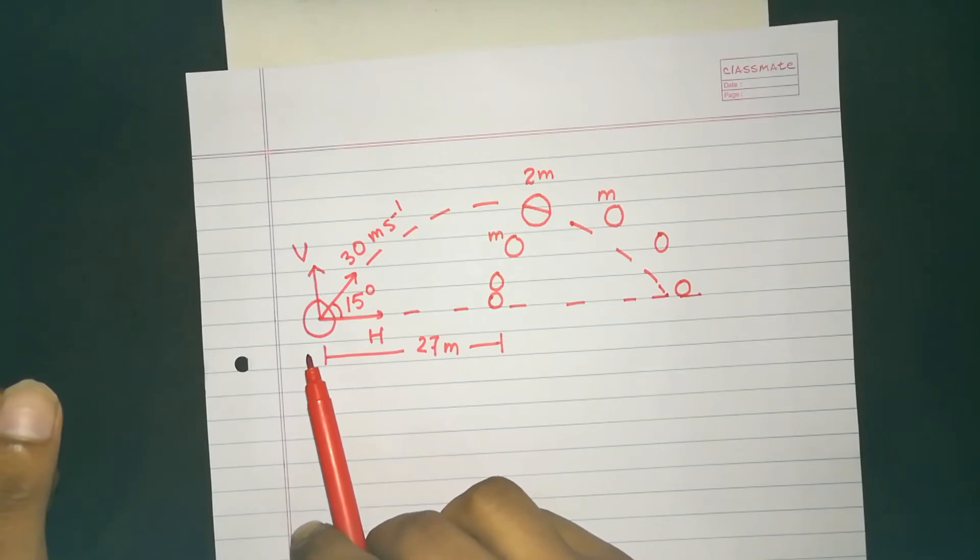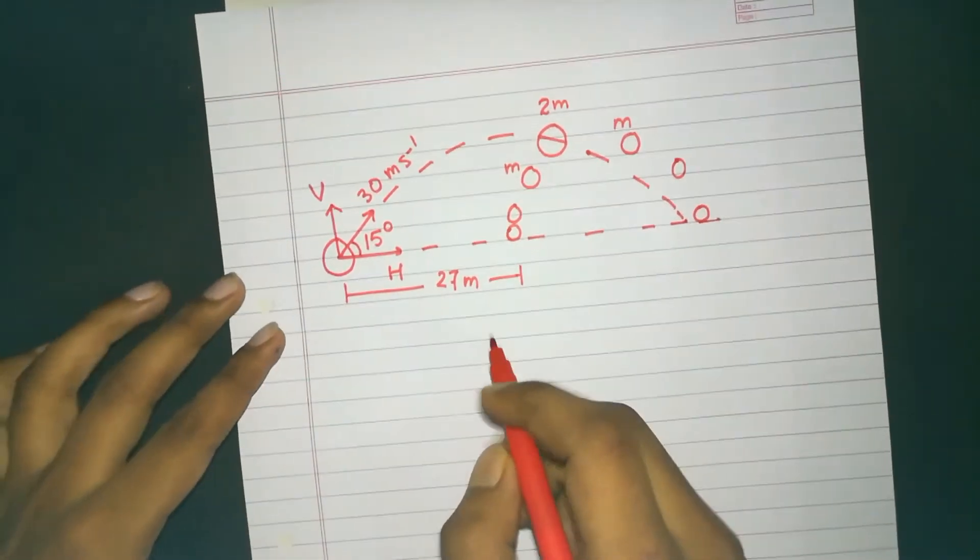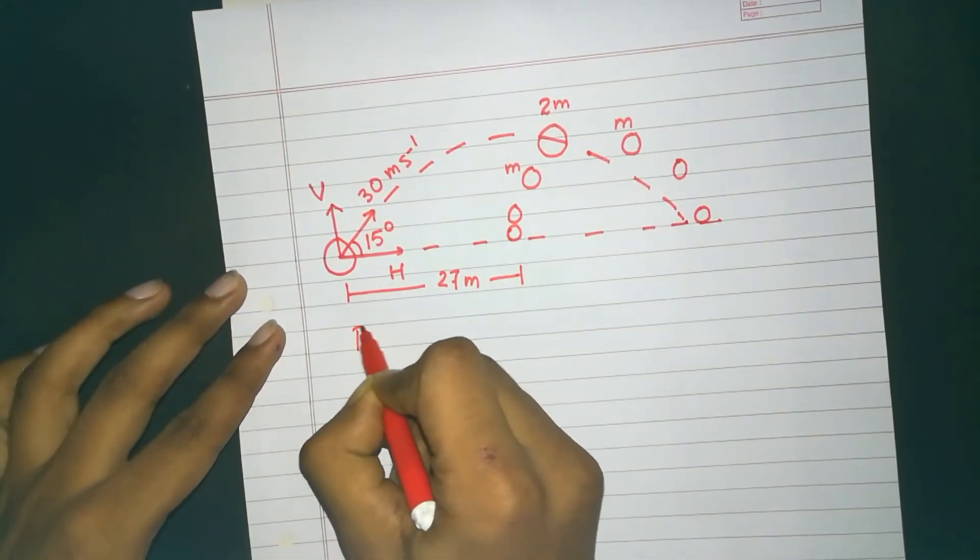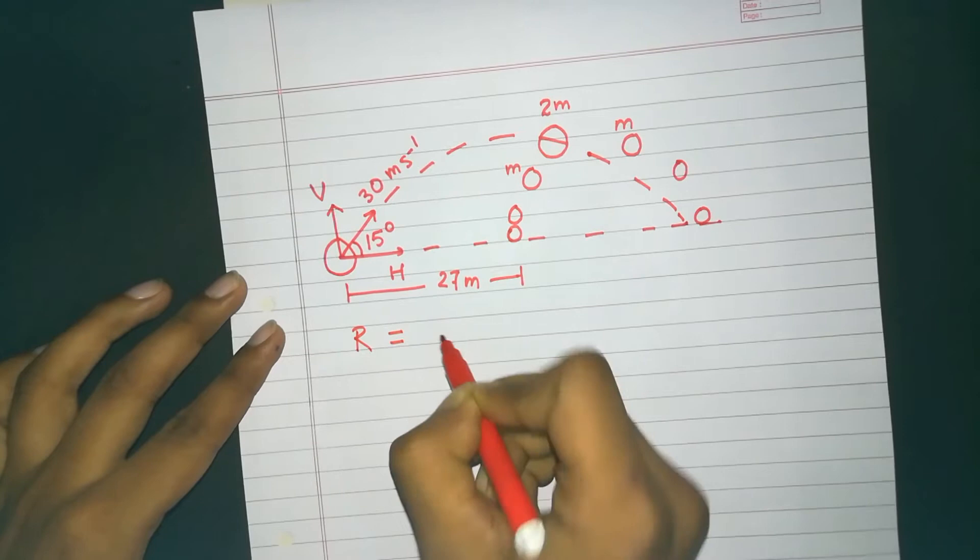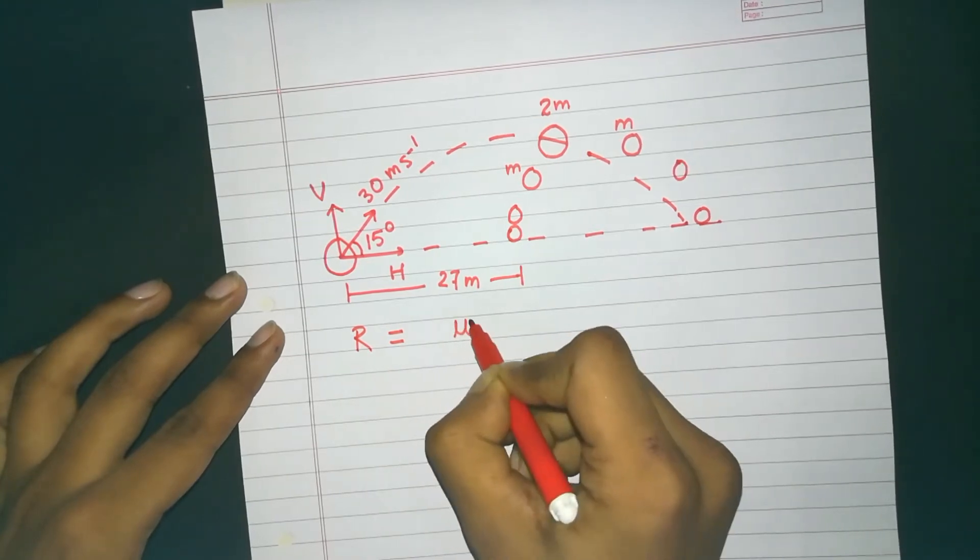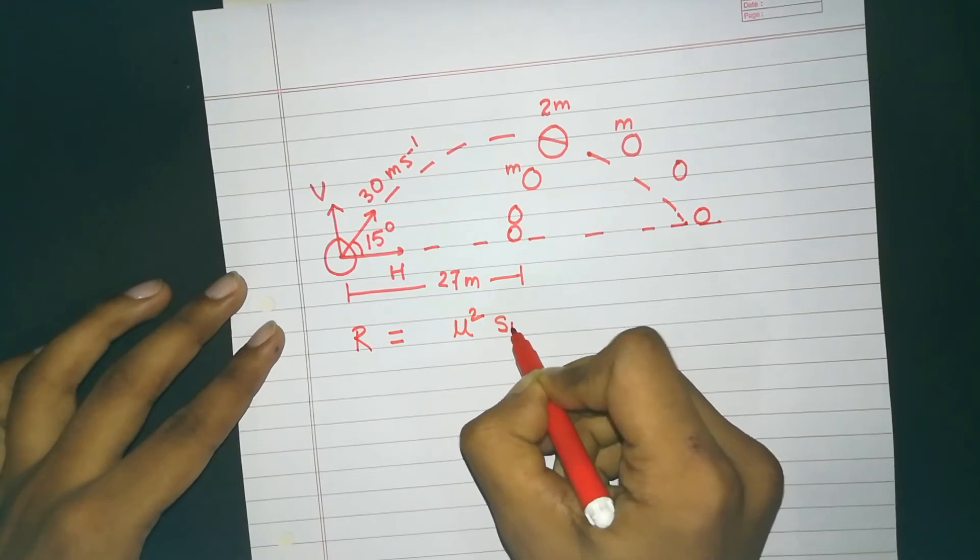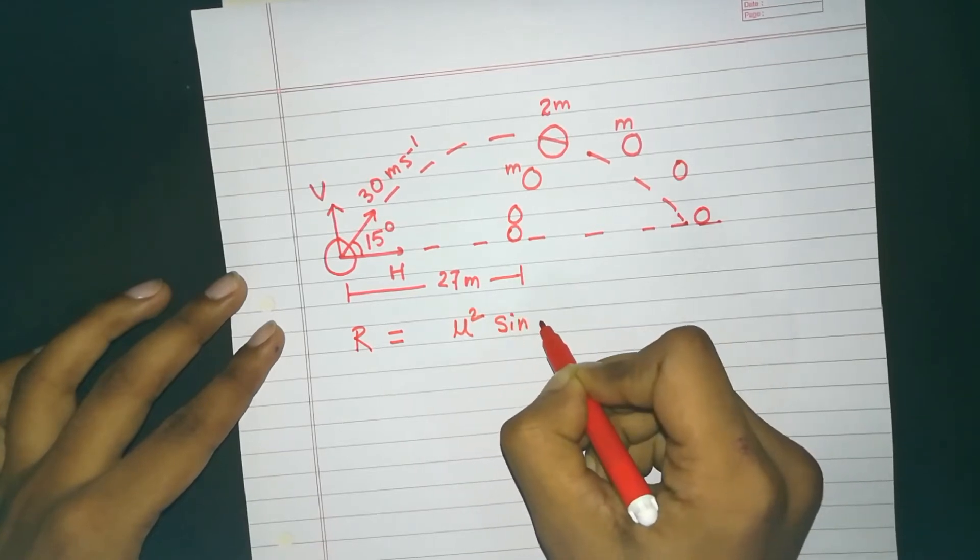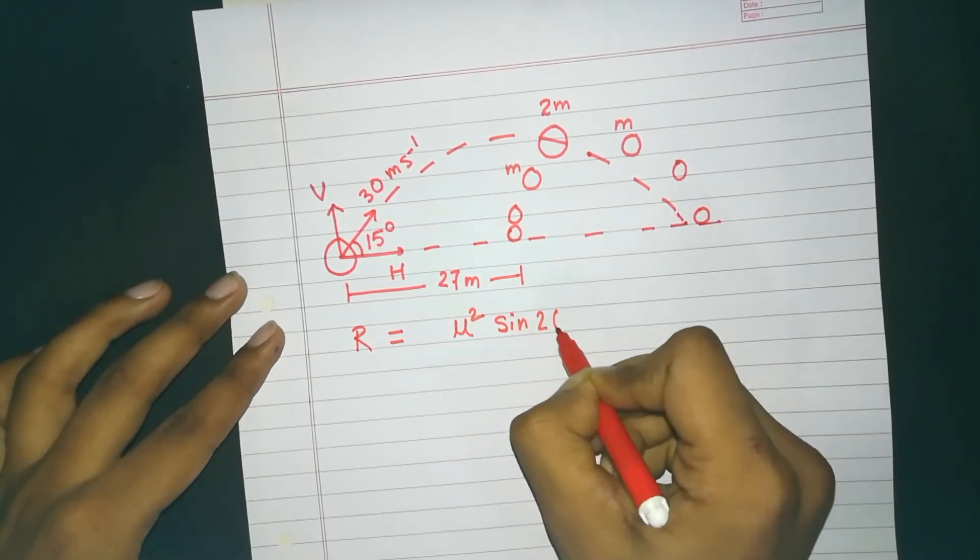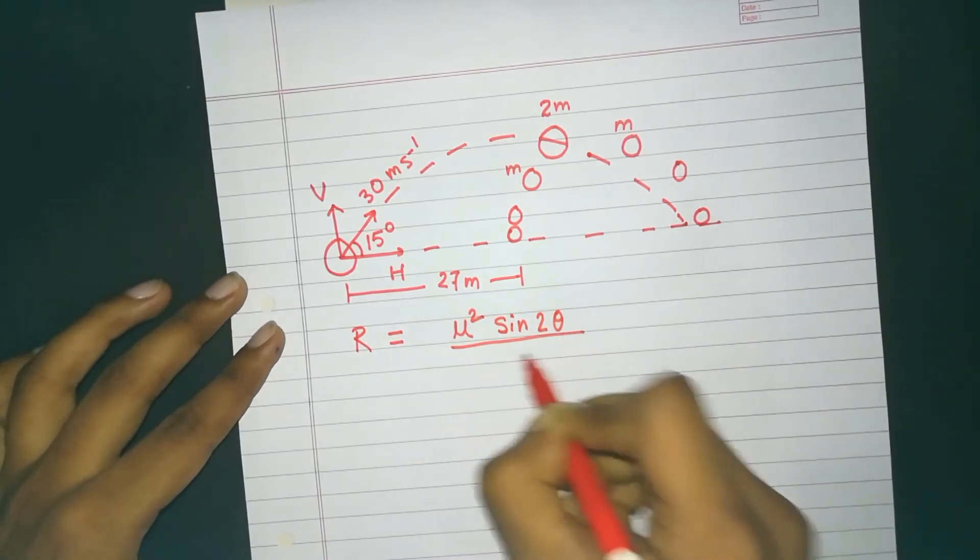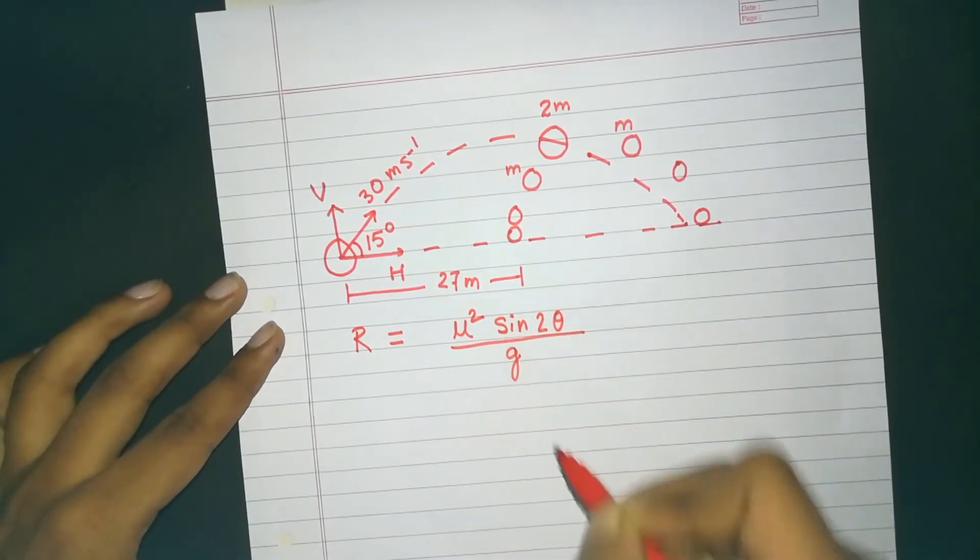So by the formula of projectile motion, we know how to calculate the range of the projectile. So we can just calculate the range. That is, we know the formula: square of initial velocity, sin of twice theta, divided by acceleration due to gravity.